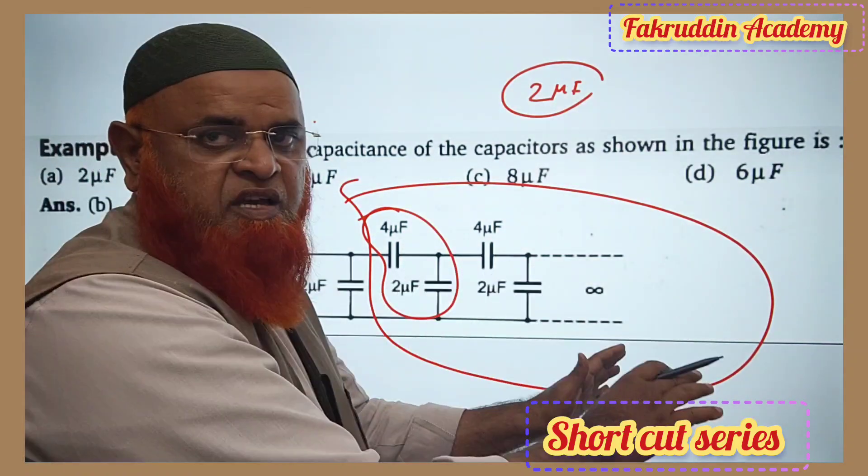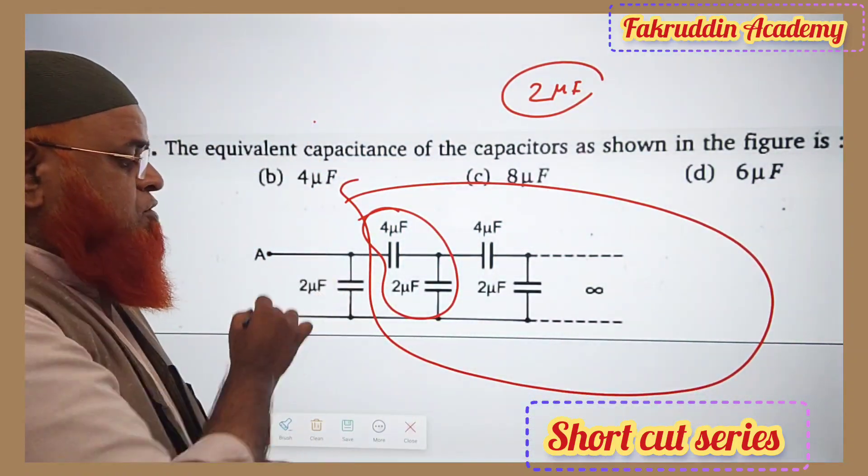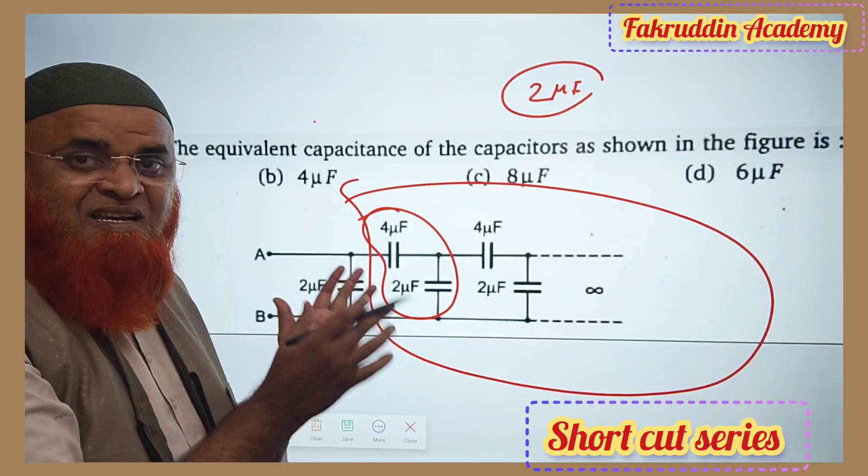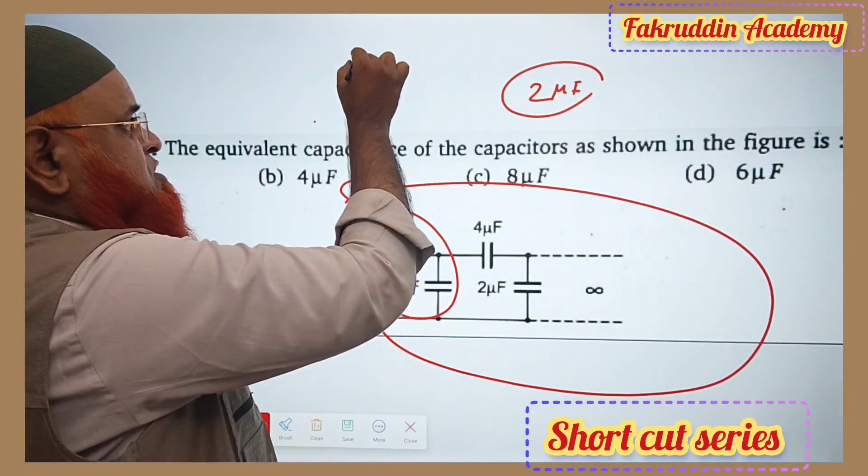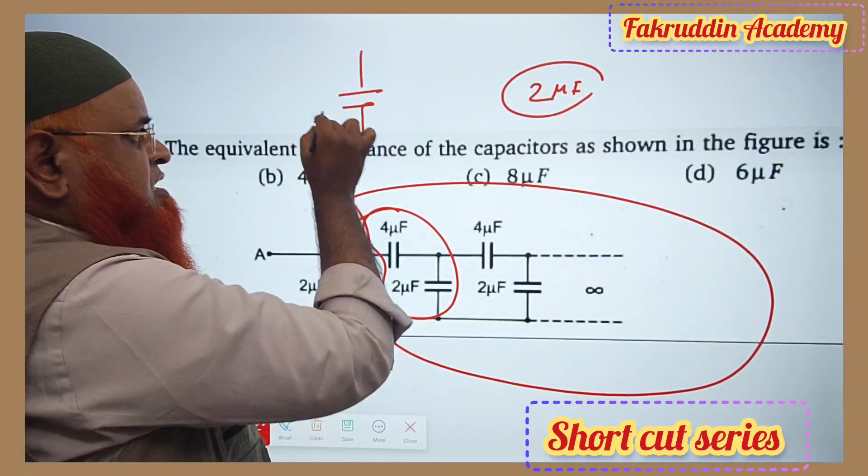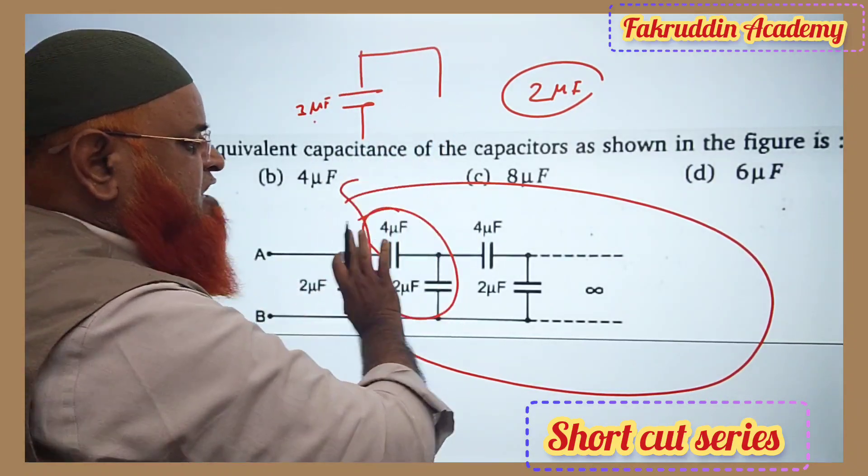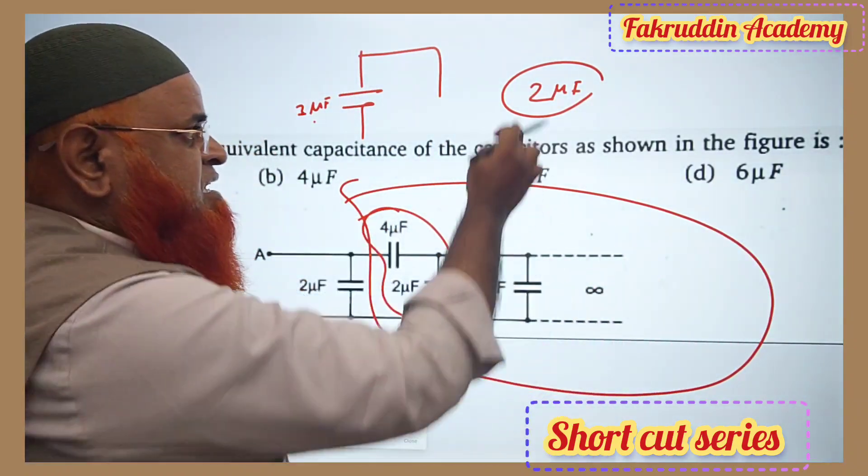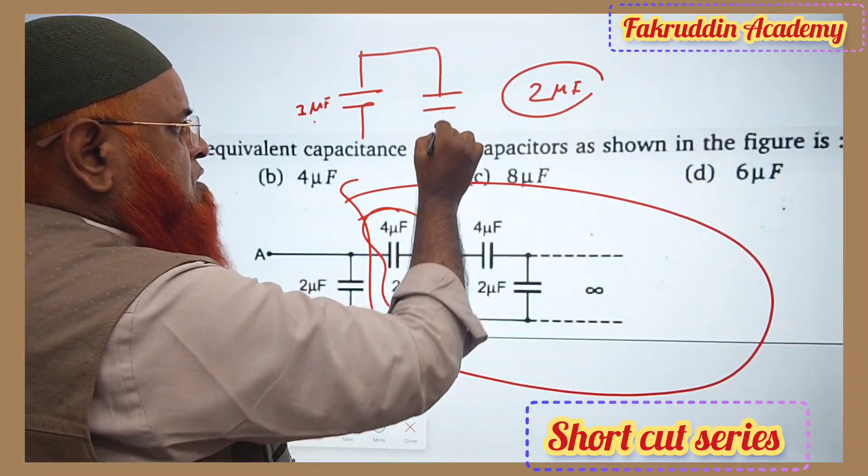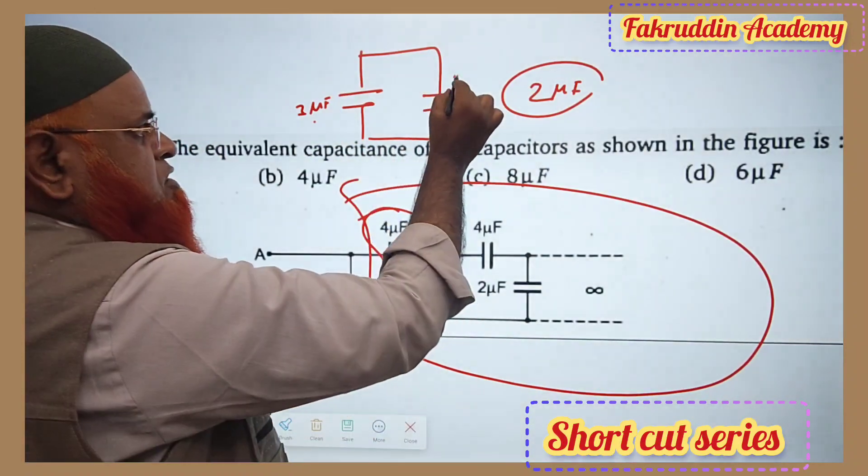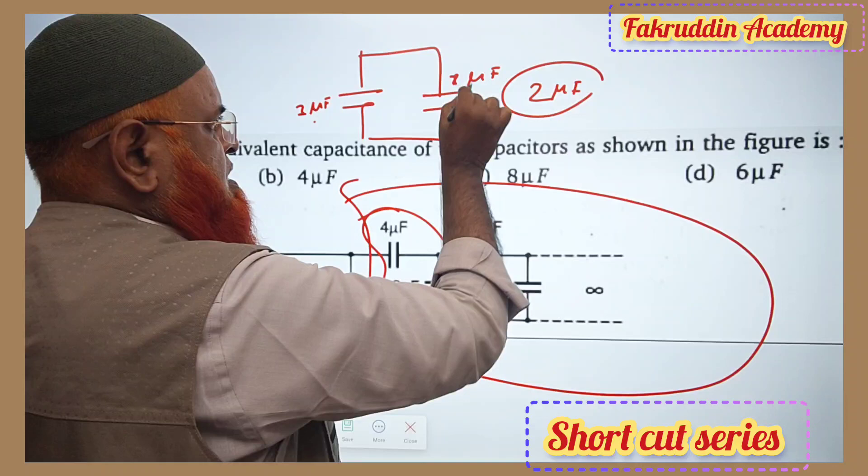And apart from this infinite series, you can see one more 2 microfarads is in parallel with that. That means you can just take like this: this is 2 microfarads, and it is in parallel with the infinite total infinite series. The answer is 2 microfarads again. You draw one more so this is also 2 microfarads.